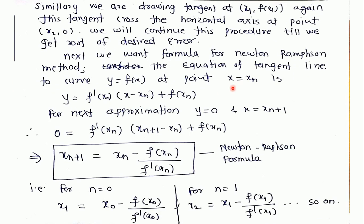Therefore, we are taking y equals 0 and x equals xn+1. Substituting this value in this equation and rearranging the terms we get xn+1 equals xn minus f(xn) upon f'(xn). This is the Newton-Raphson formula.